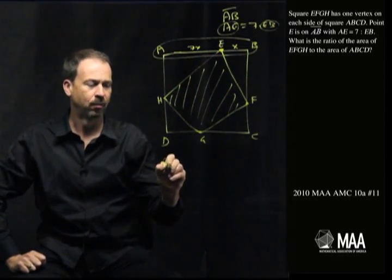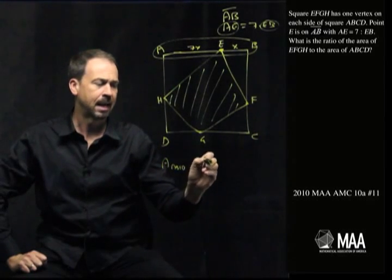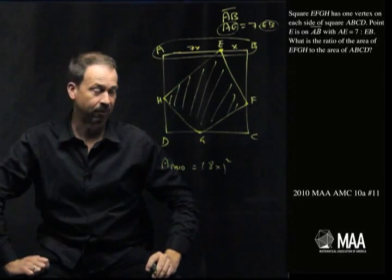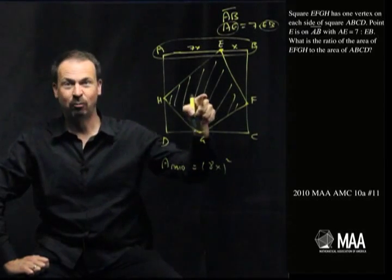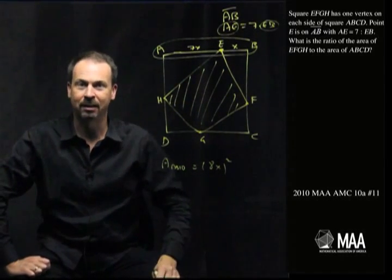So I know the area of A, B, C, D would be 8X squared. I've got a formula for it. So I guess all I need to do now is work out the area of the shaded square and I'm set to go.